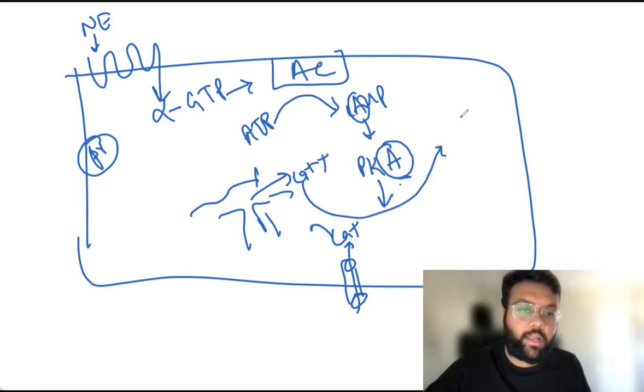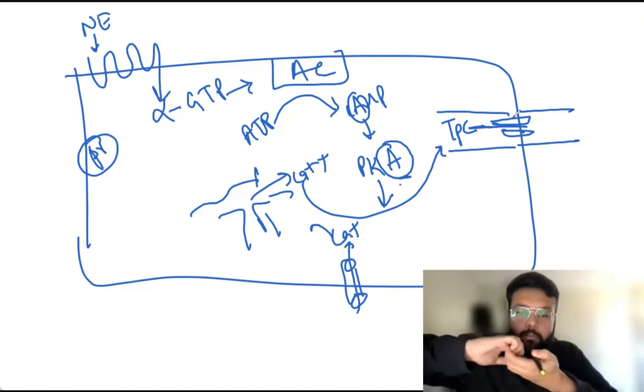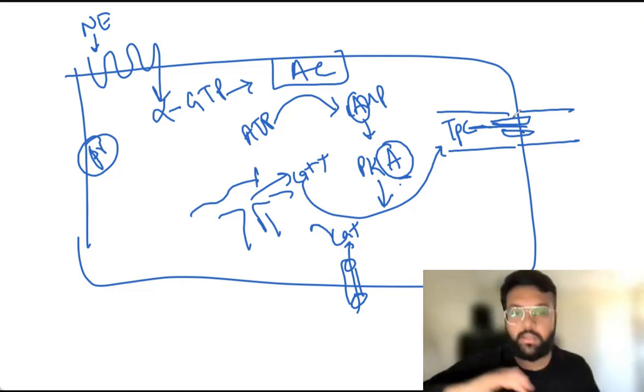This calcium will now bind with troponin C, which will result in unmasking. It will pull out the tropomyosin, which will result in unmasking for the binding side for the actin and myosin. And now the actin and myosin can come together and will lead to muscle contraction.